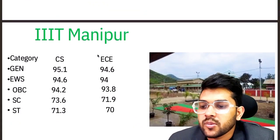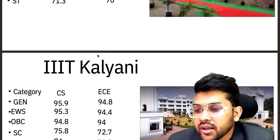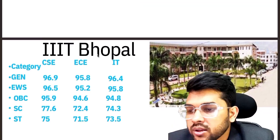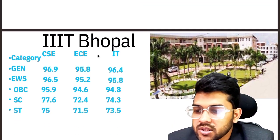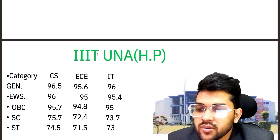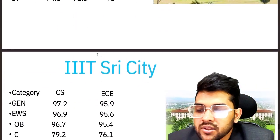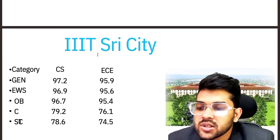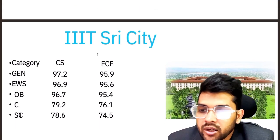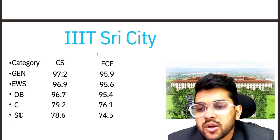For IIIT Manipur — CSE: 95.1, 94.6, 94.2, 93.6, 71.3. For IIIT Kalyani: 95.9, 95.3, 94.8, 75.8, 74. For IIIT Bhopal: 96.9, 96.5, 95.9, 77.6, 75. For IIIT CCT: 97.2, 96.9, 96.9, 96.7, 79.2, 78.6 for CSE. Some IIITs provide a separate female reservation cutoff; others do not, so no female cutoff is listed for those.